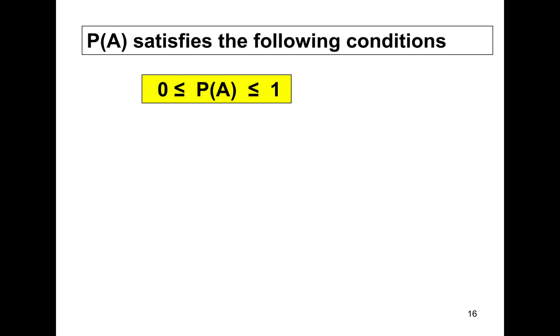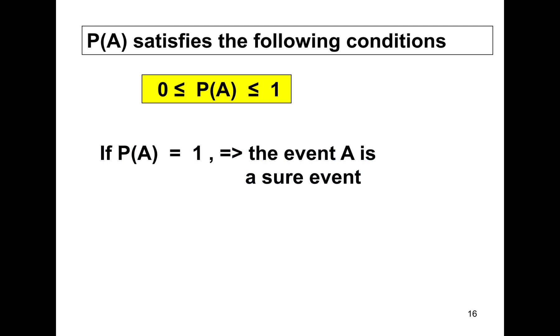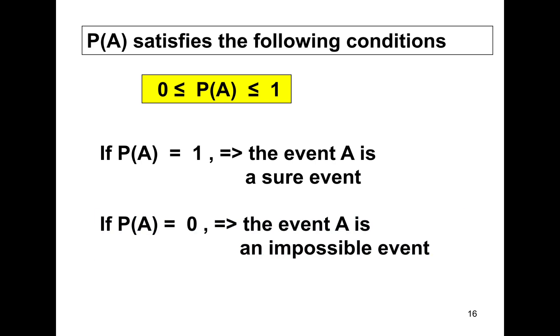The probability of event A satisfies the following conditions. The probability of A is between 0 and 1. If the probability of A is equal to 1, therefore the event A is a sure event — it's 100% sure it's going to happen. And if the probability of A is equal to 0, therefore it means the event A is an impossible event.